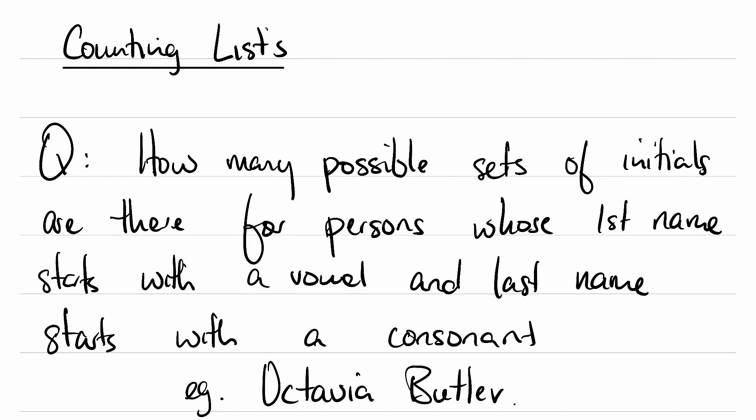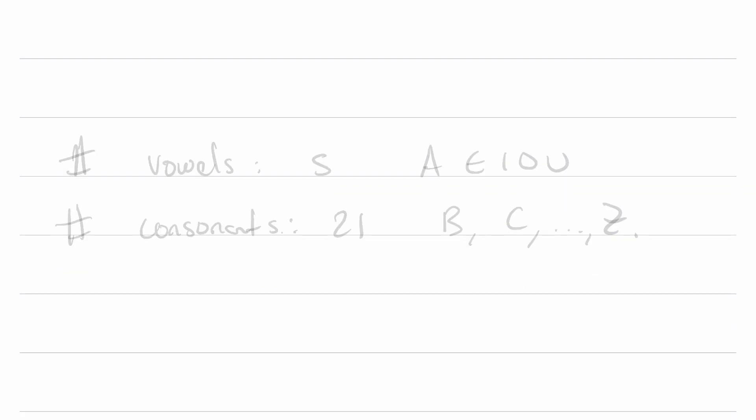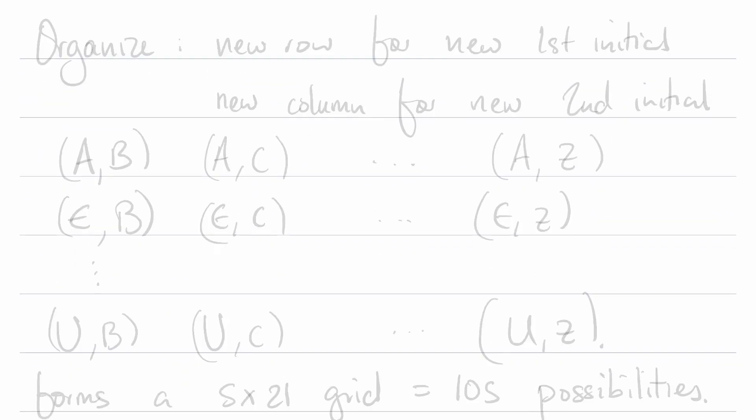For example, Octavia Butler. For ease of this discussion, we're sticking to the standard English alphabet with 26 letters, no accents, et cetera. Let's break down what this question is actually asking us. The number of vowels is 5: A, E, I, O, U. And the number of consonants is therefore 21: B, C, all the way up to Z.